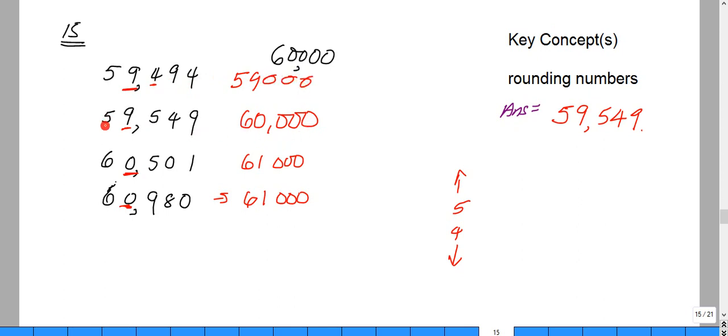59,549 when rounded to the nearest thousand is equal to 60,000.